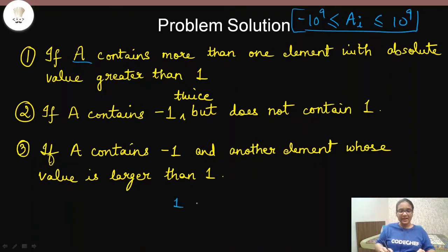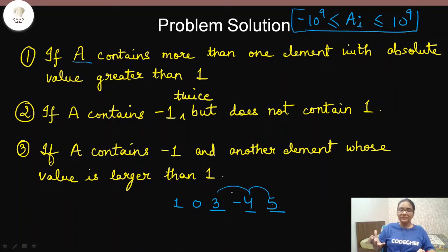For example, if we have the array [1, 0, 3, -4, 5], here we have three elements with absolute value greater than one: 3, -4, and 5. If we multiply any pair of these — like 3 × (-4) — we get -12, which is not present in the array. So this kind of array can never be closed under multiplication.